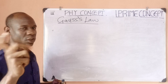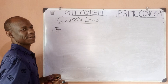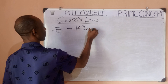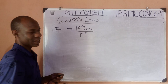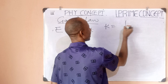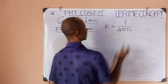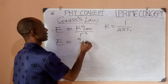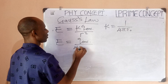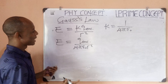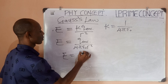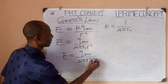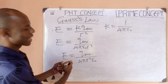Recalling Coulomb's Law of electrostatics, E equals k times Q enclosed divided by r squared. Since k equals 1 over 4π epsilon naught, substituting gives E equals Q enclosed divided by 4π epsilon naught r squared. We can rewrite this as E equals Q enclosed divided by 4π r squared times epsilon naught.